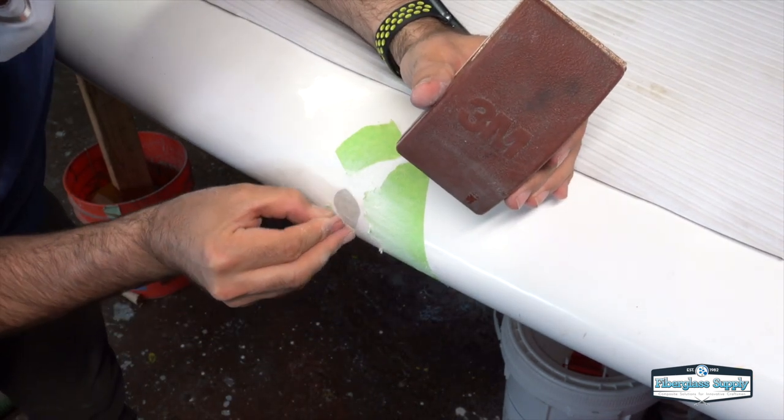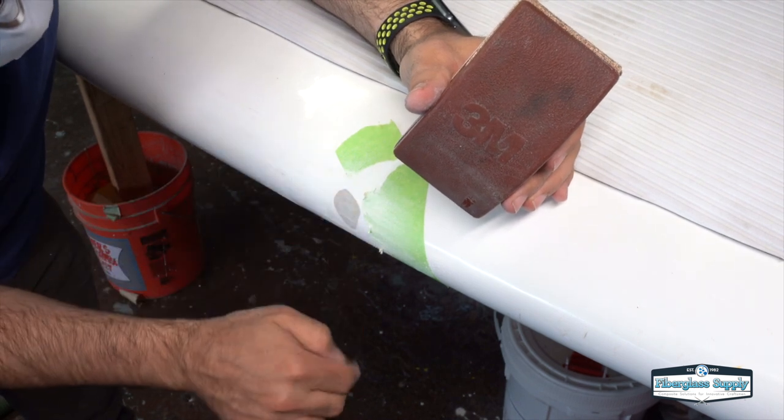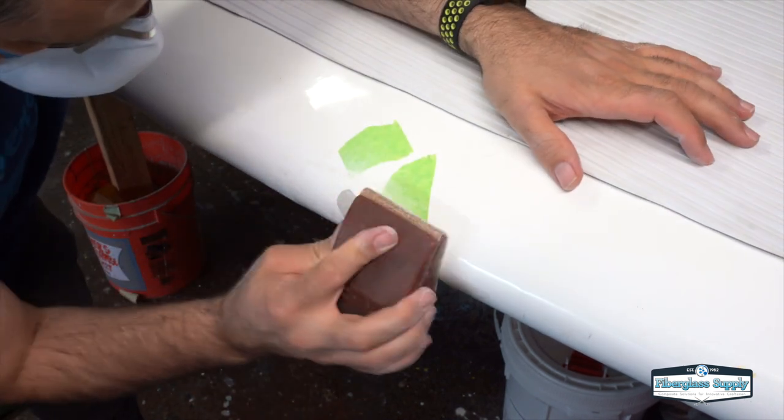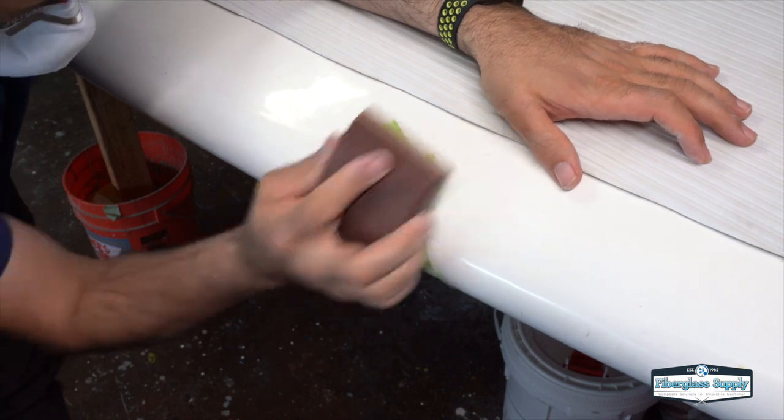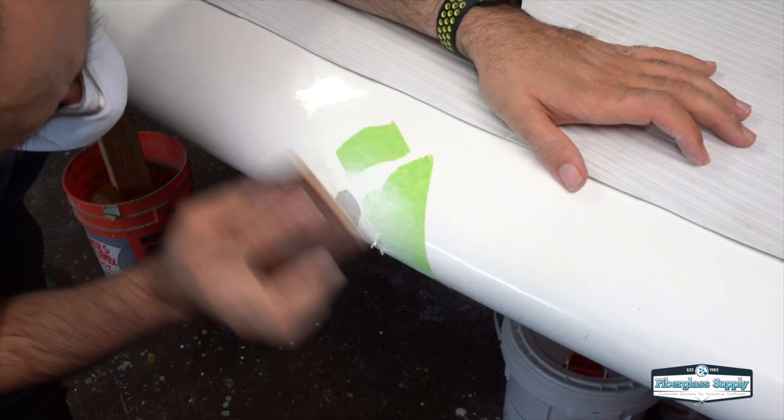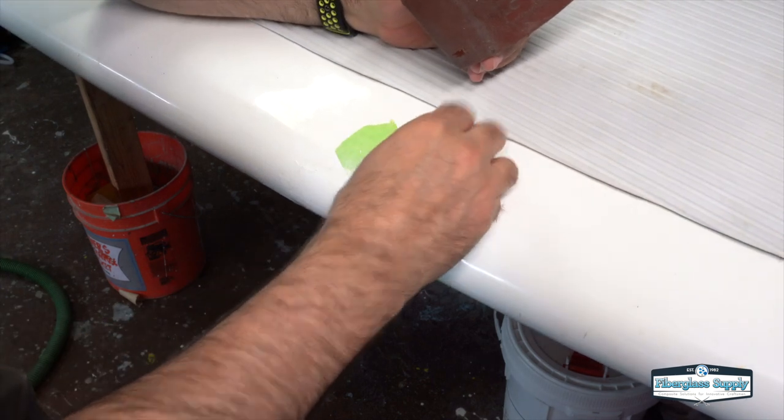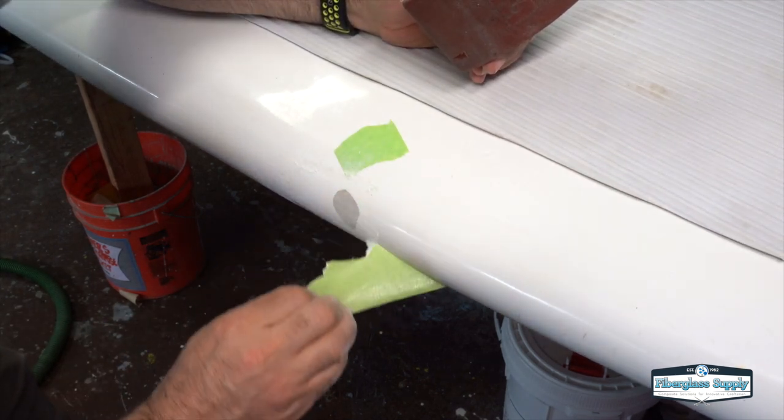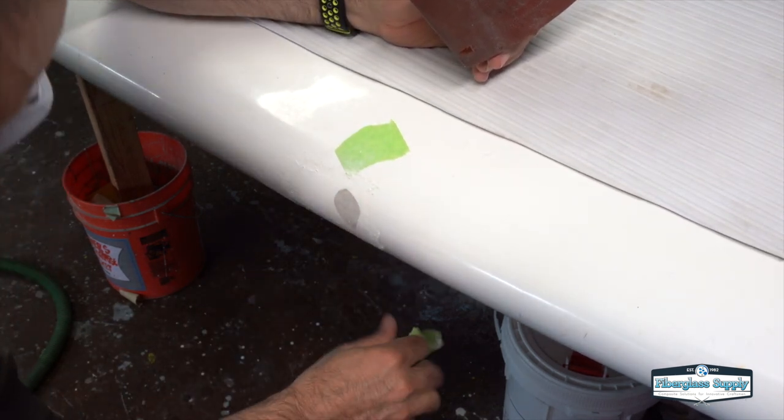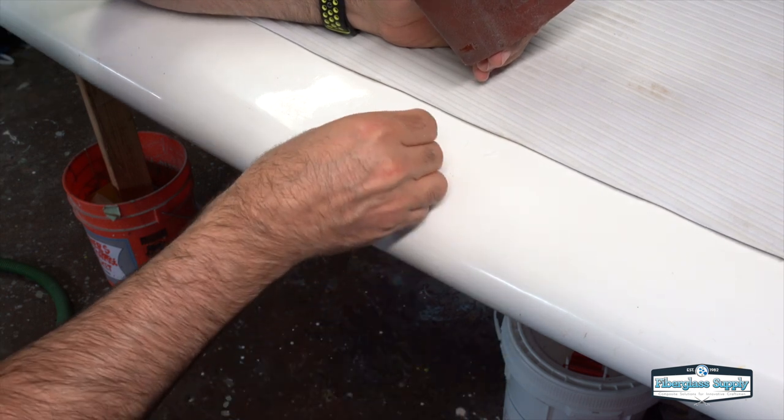And then once we're down the level of the tape, we're going to remove the rest of the tape. And you'll notice now at this point we are sanding into a bigger area around the ding. That's okay. If we'd gotten into the board before we remove the tape with the rougher grits, we would have to sand a much bigger area.